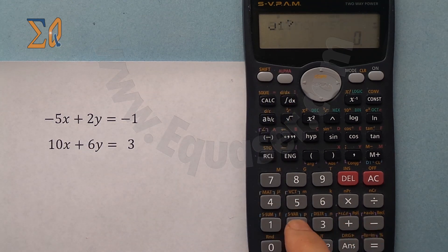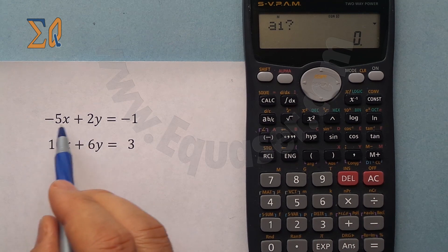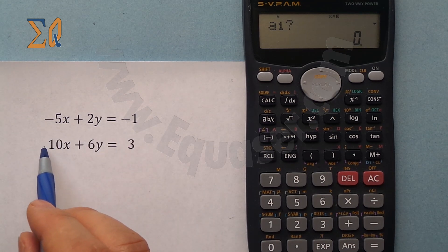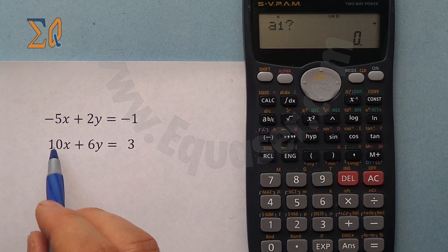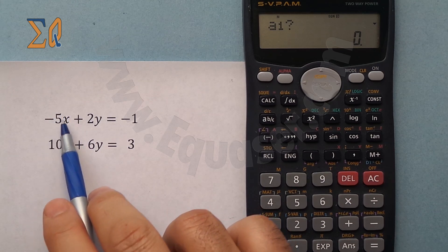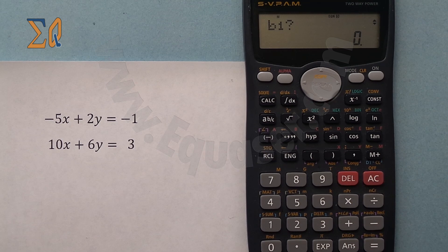Now a1 for equation 1, this is a1, b1, c1, and then for equation 2 this is a2, b2, c2. So a1 refers to the coefficient of the first variable which is x, minus 5. I press minus and then 5 equal. As soon as I press equal you can see B appeared.